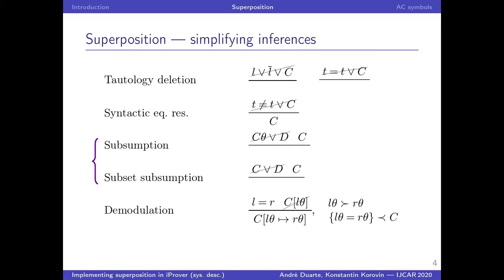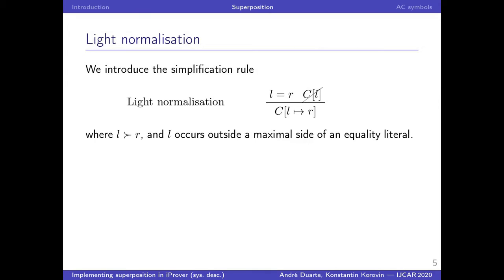In that vein, regarding demodulation, we can also conceive of a weaker variant that doesn't check instantiation. We call it light normalization. So, light normalization is the simplification rule, simply that given an orientable unit equation, if we find the left-hand side on a clause, except this corner case here, we can replace it by the right-hand side.